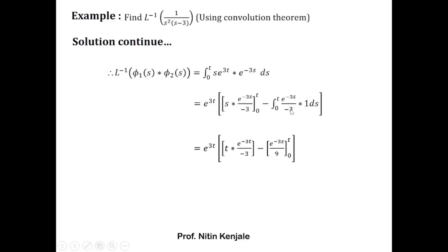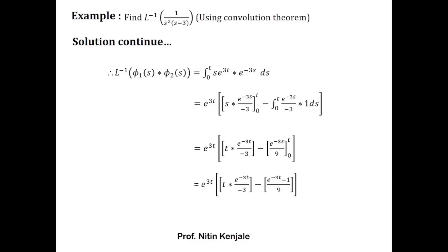Now we evaluate the remaining integral: the integral of e^(−3s)/(−3) with respect to s gives e^(−3s)/9, evaluated over the limit 0 to t. After substituting the limits we get (e^(−3t) − e^0)/9, that is (e^(−3t) − 1)/9. This gives us the final inverse Laplace transform of 1/(s²·(s−3)). I hope you understood how to use the convolution theorem for finding the inverse Laplace transform.